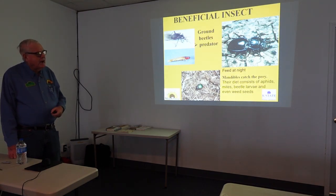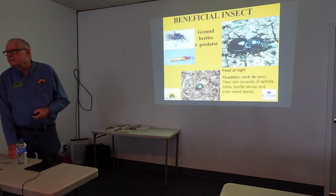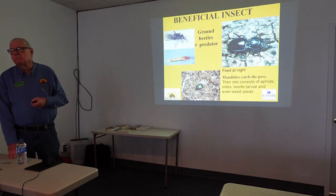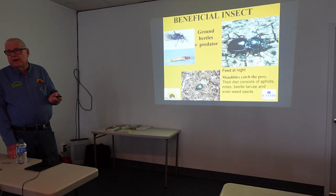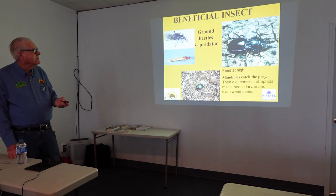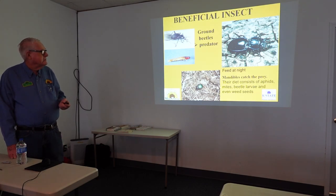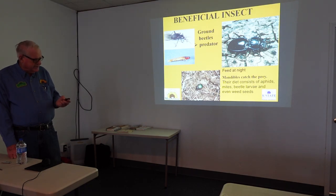Ground beetles — I have fun with kids on this one because with the big long mandibles, they say 'that's a bad insect.' I say: 'You can't always judge a book by its cover.' This is really a good insect. It not only eats other insects but also eats weed seeds, so it's beneficial from that standpoint too. The mandibles are used to catch and hold prey. Their diet mainly consists of aphids, mites, beetle larvae, and even weed seeds.